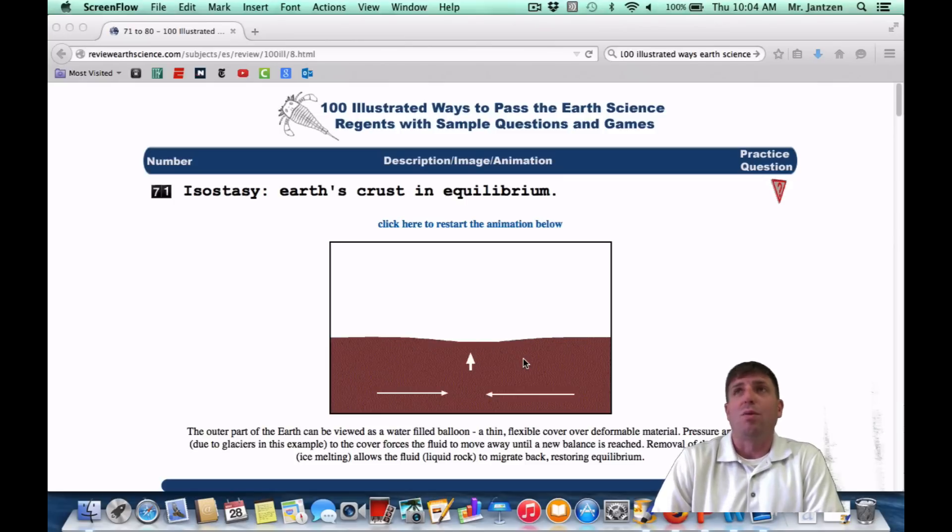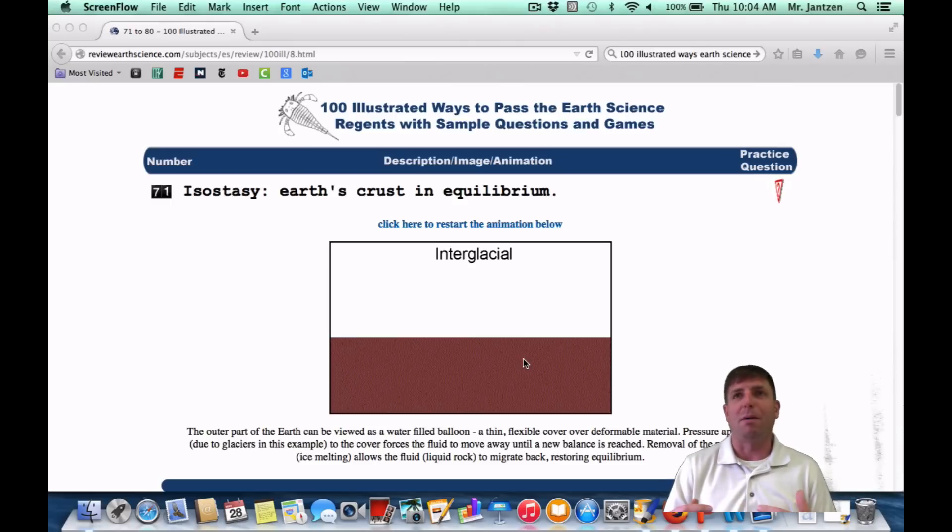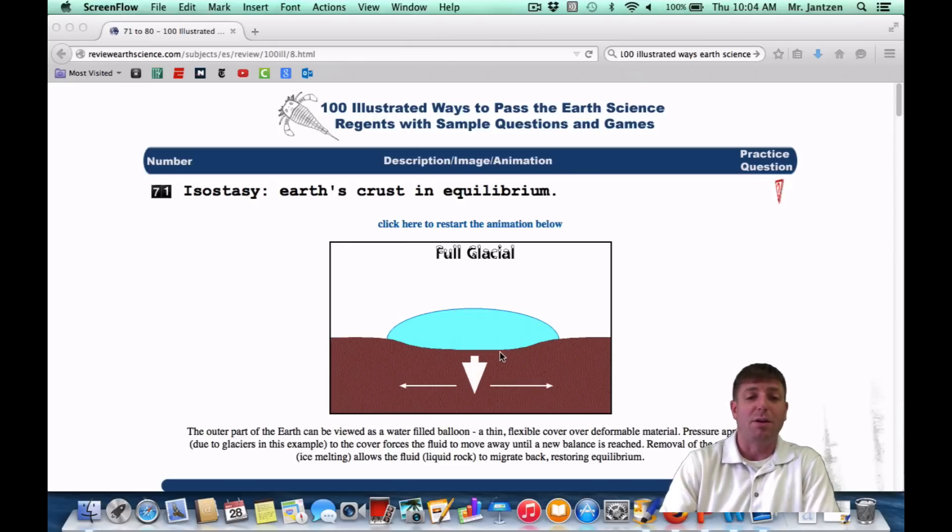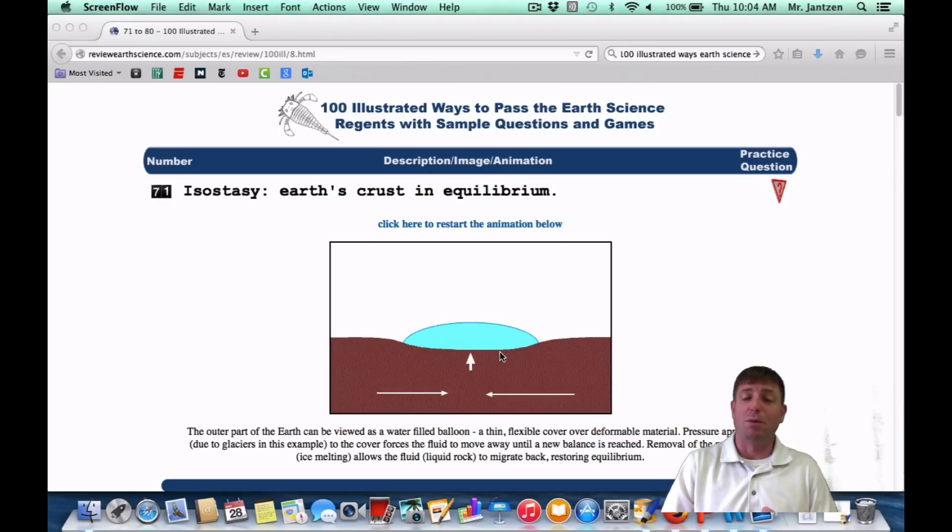Number 71, isostasy, is when Earth's crust is in equilibrium. Basically, it's when the crust is in this gravitational balance upon the mantle. In other words, when you put things on top of the crust, it's going to kind of go down. But when you take things off the crust, it's going to rebound or kind of bounce back up.